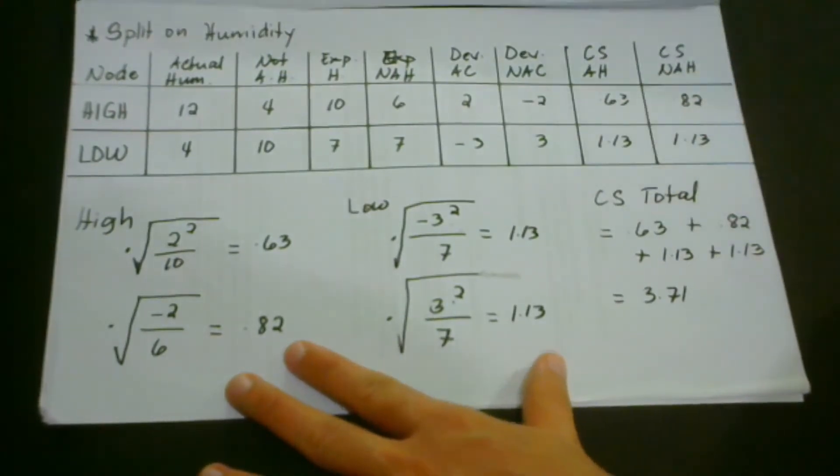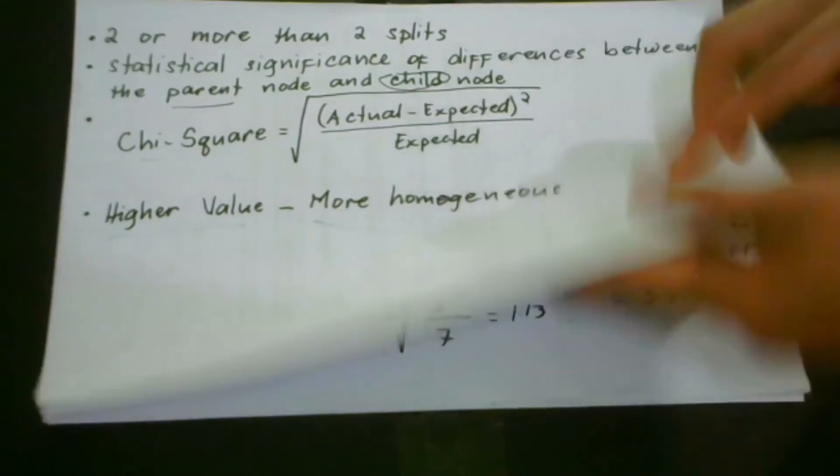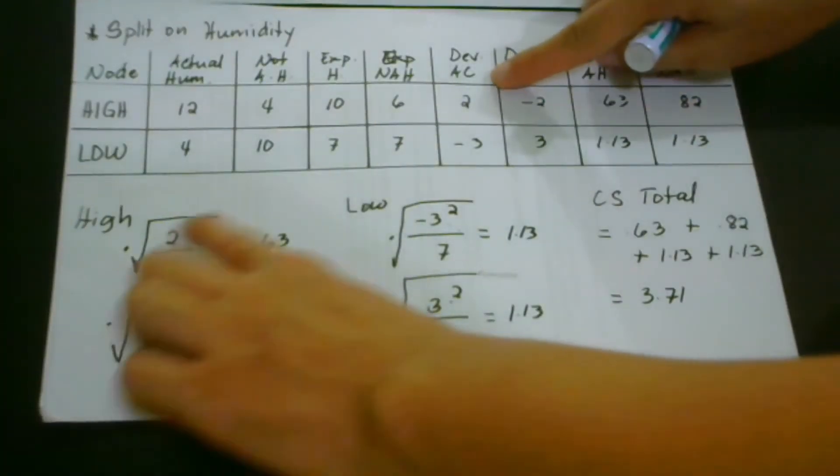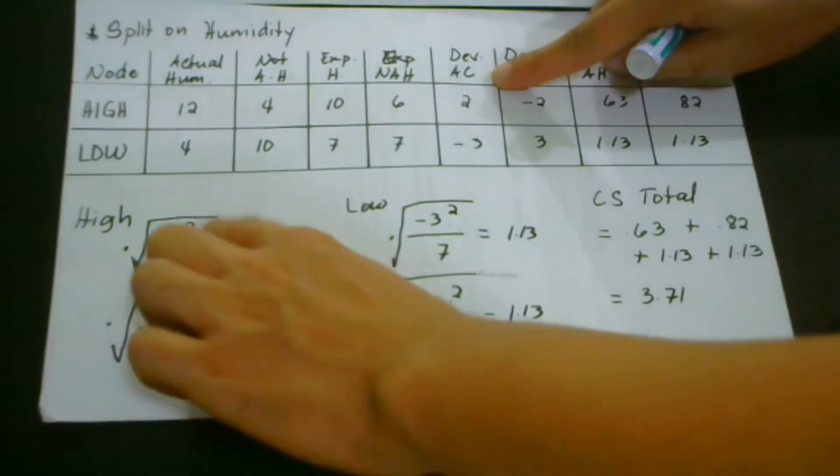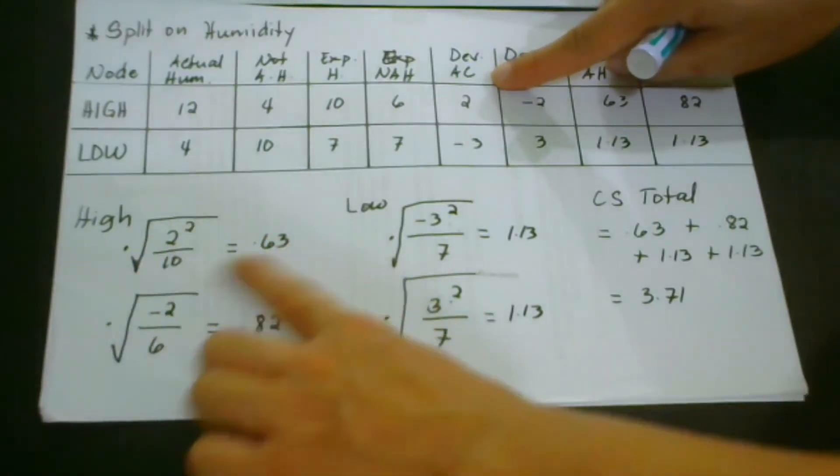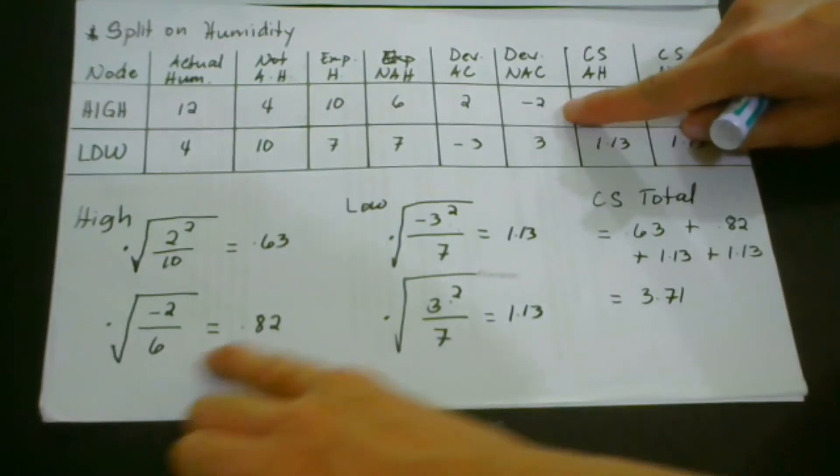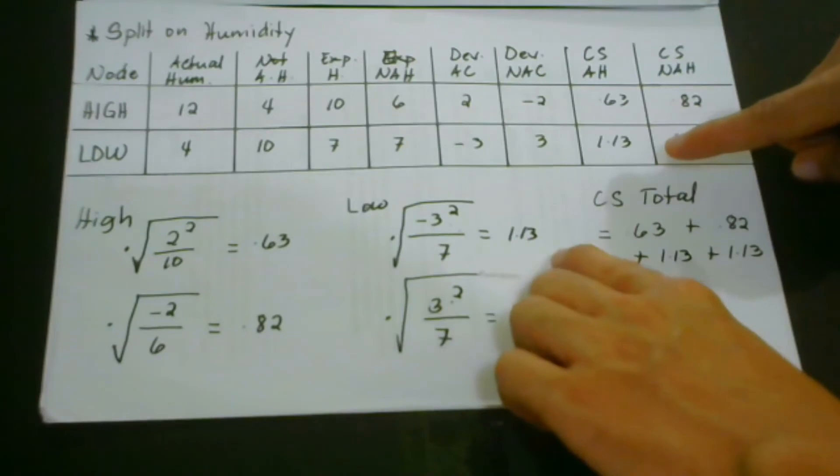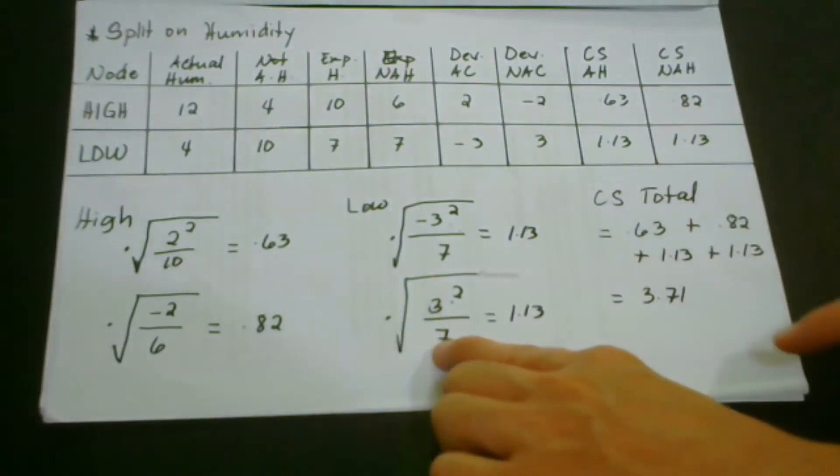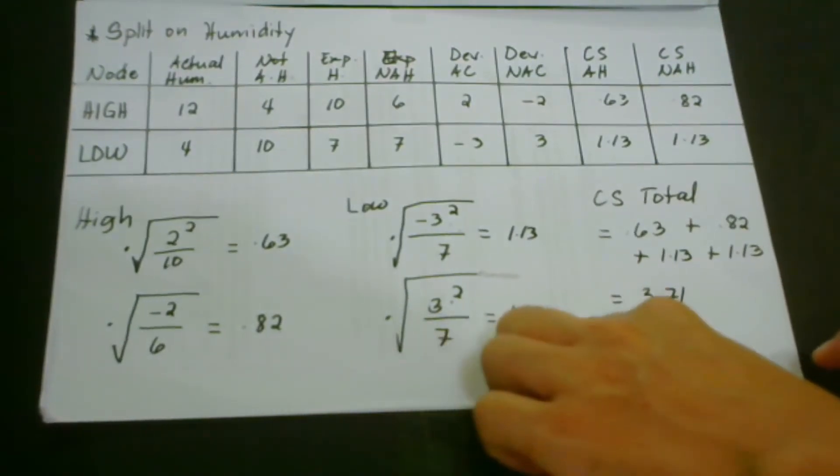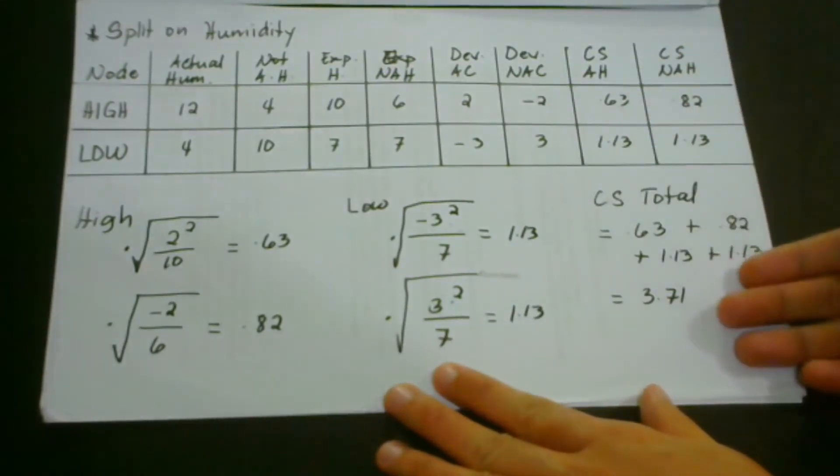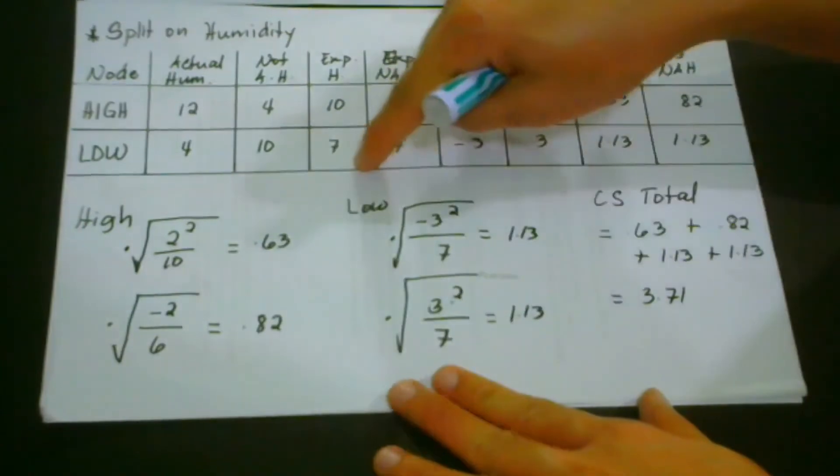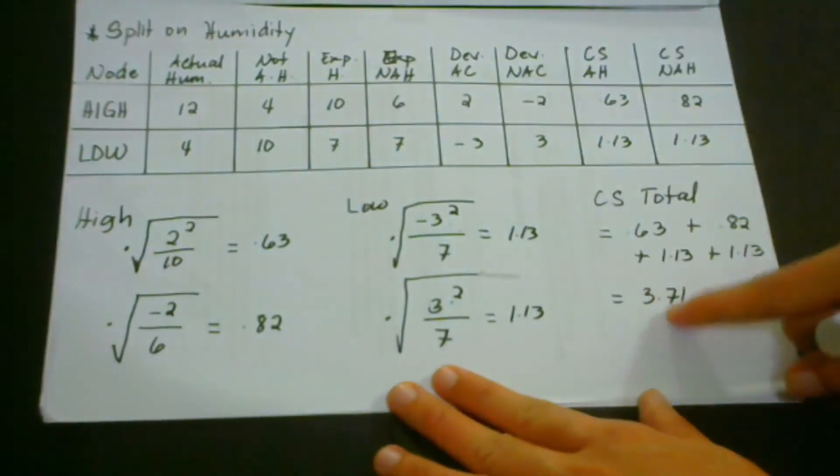And how we do that? The same process, we plug in the values in our formula. And so this one, we have two squared divided by ten, and we get the square root, then we have 0.63. And for the negative two, we have 0.82. For the negative three, we have 1.13. For the positive three, we have 1.13. On the same process here, we get the sum total of all of these values, and then we have 3.71.